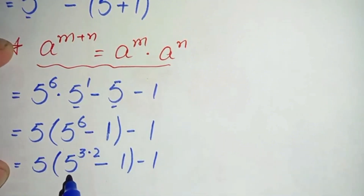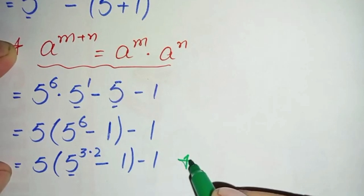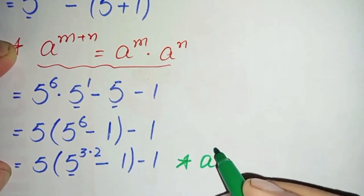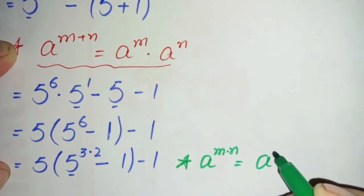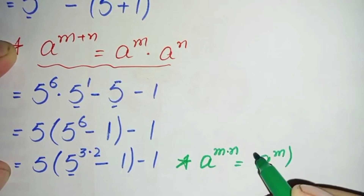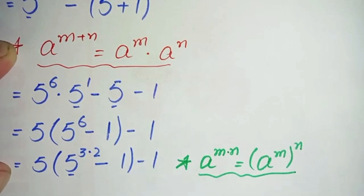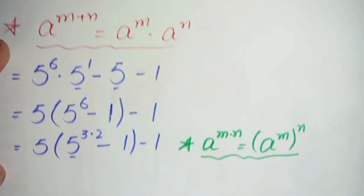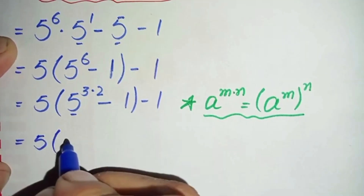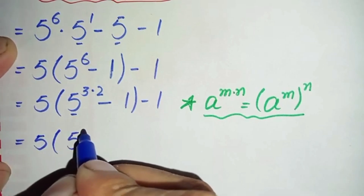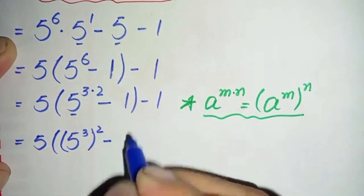Again here in this term we will use an exponential math property. We will use the property: a raised to power m times n can also be written as a raised to power m, whole raised to power n. Using this exponential property, this equation will become 5 times 5 raised to power 3, whole raised to power 2.